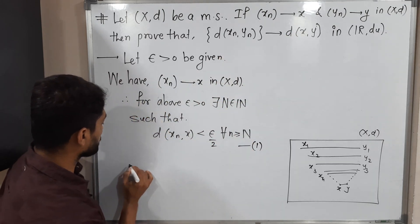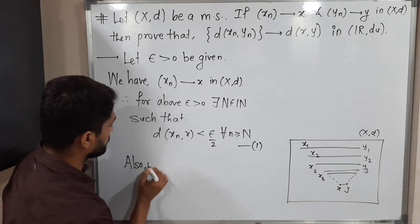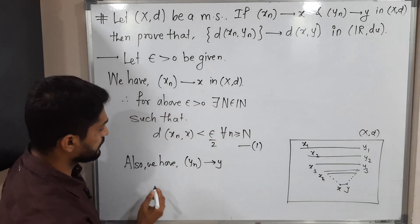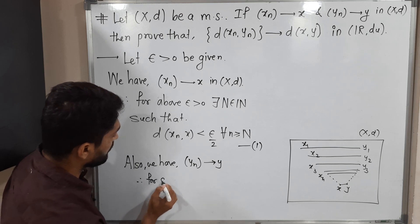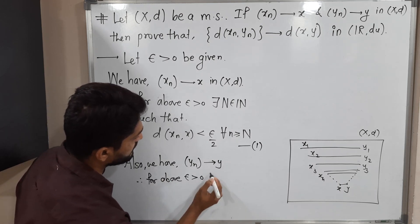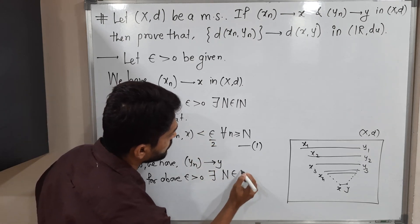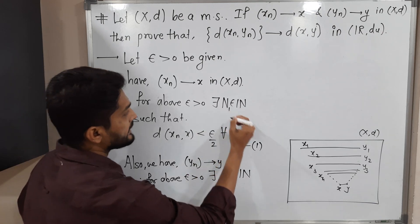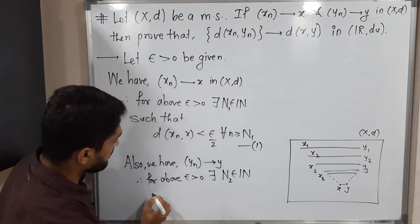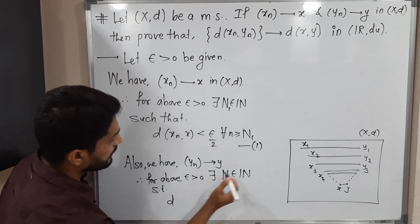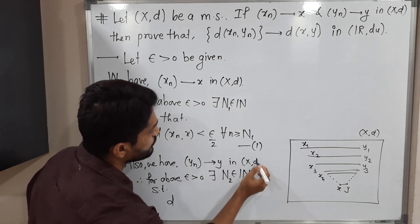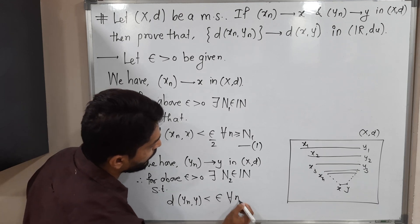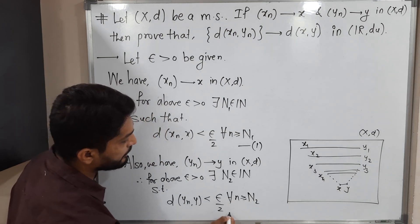We also have the second information: yₙ converges to y. Therefore, for the same epsilon > 0, there exists a natural number N₂ such that d(yₙ, y) < ε/2 for all n ≥ N₂. Call this statement 2.